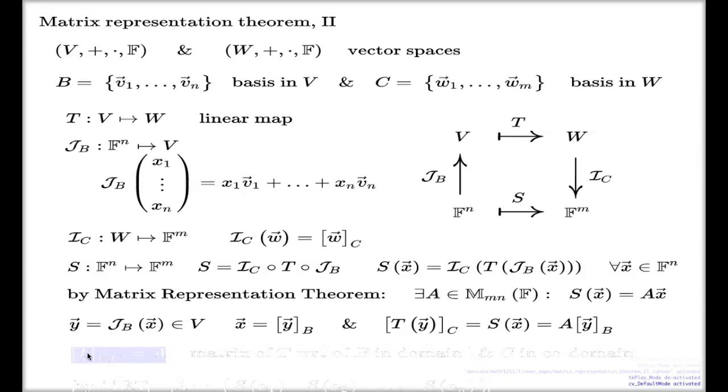This matrix has a particular name and notation that we're going to use. It will be linear map symbol T in brackets with two subscripts here indicating the basis, because obviously this matrix depends on the choice of basis. Different basis brings different matrices.